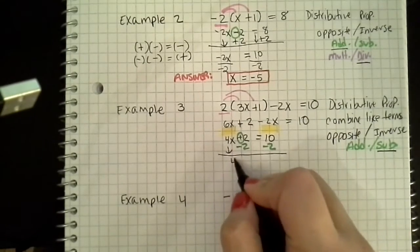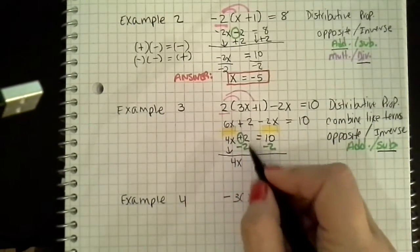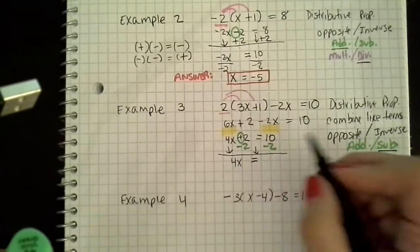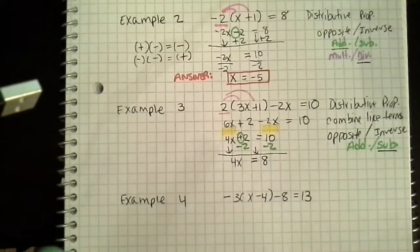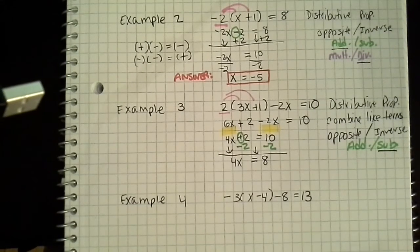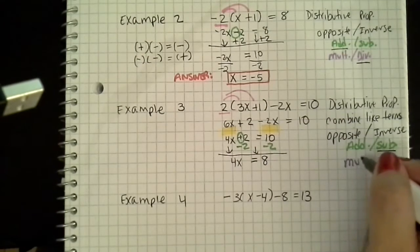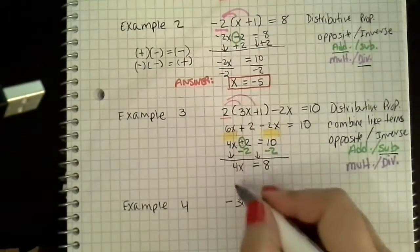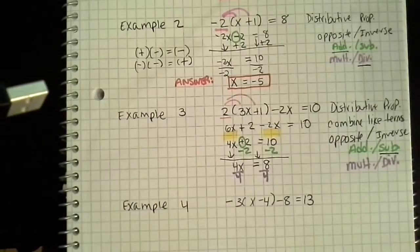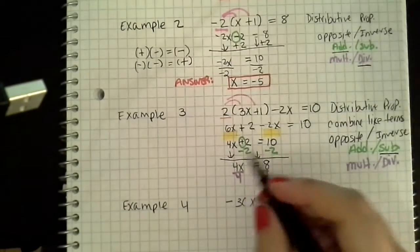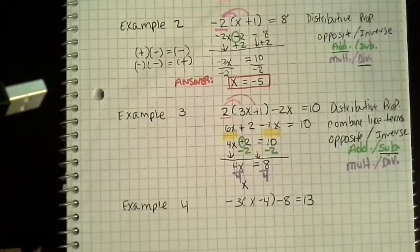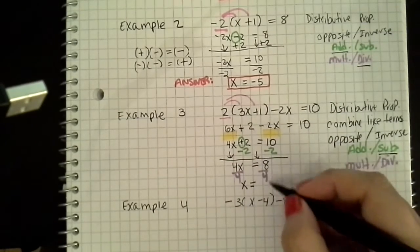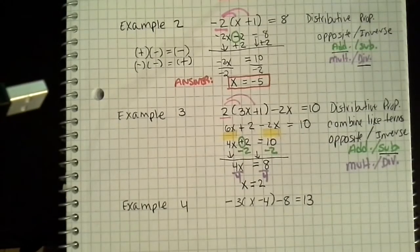So this gives me — bring this down to 4x. That's a 0, 2 minus 2 is 0. Bring the equal sign down. 10 minus 2 is 8. The next inverse operation using PEMDAS backwards is multiplication or division. And in this case I'm going to divide by 4. 4 divided by 4 is 1 — I don't need to write the 1 in front of the x. Bring the equal sign down. 8 divided by 4 is 2. Voila, that's my answer. So I'm going to box it in.